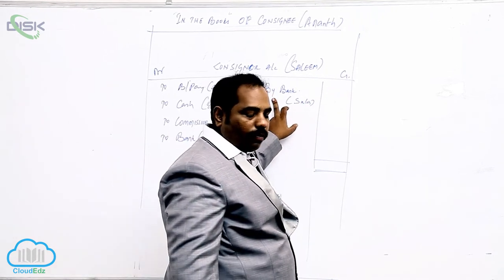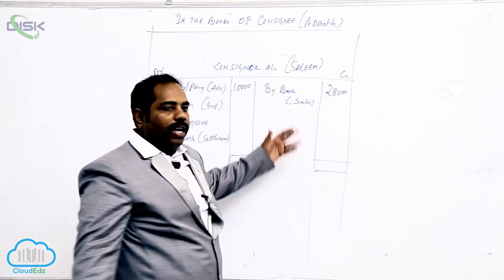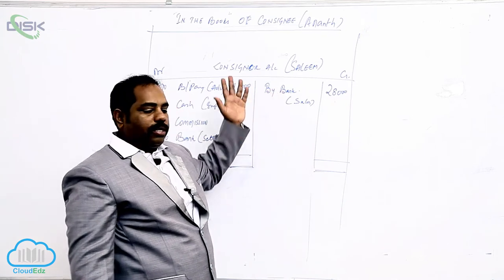So we are receiving cash. The entire stock was sold for 28,000. So bank account debit to consigner, because we are receiving a check. We will write what? Bank to consigner.